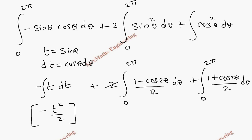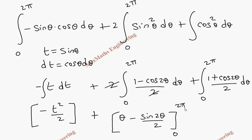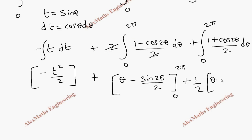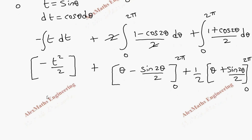Integrating: the substituted term gives minus t²/2. After cancellation, the sin²θ integral yields θ minus sin2θ/2, evaluated from 0 to 2π. The cos²θ integral gives (1/2)(θ plus sin2θ/2), also from 0 to 2π. For the first term, we replace t back with sinθ.